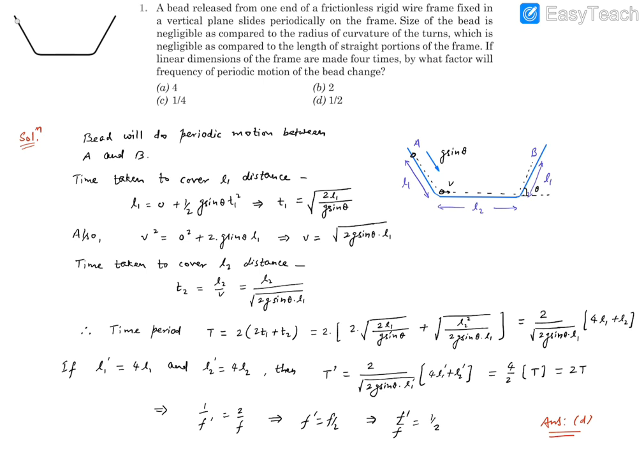We know that along the inclined plane there is an acceleration component called g sin θ and g cos θ is perpendicular which gives the normal reaction. Here it's been stated that its motion is periodic motion between A and B.